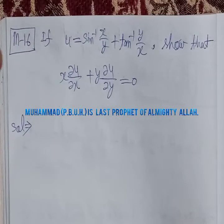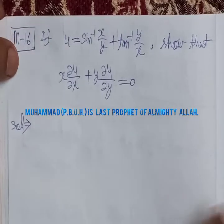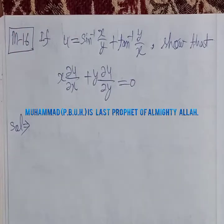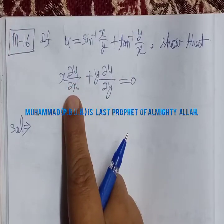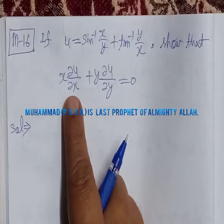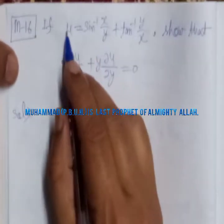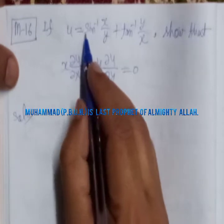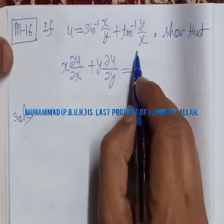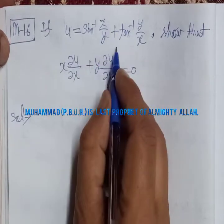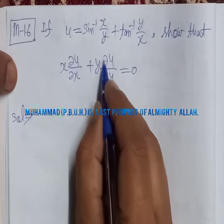Bismillahirrahmanirrahim. This problem is related to differential calculus and the chapter is partial differentiation. I have solved this question earlier using Euler's formula, but here I will solve it without using Euler's formula, using a different method. We are given u = sin⁻¹(x/y) + tan⁻¹(y/x), and we need to prove that x·∂u/∂x + y·∂u/∂y = 0.